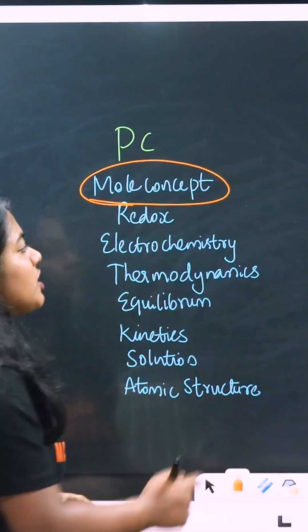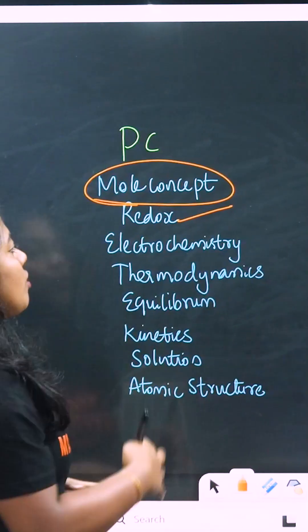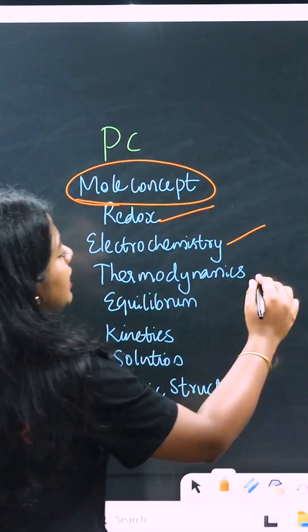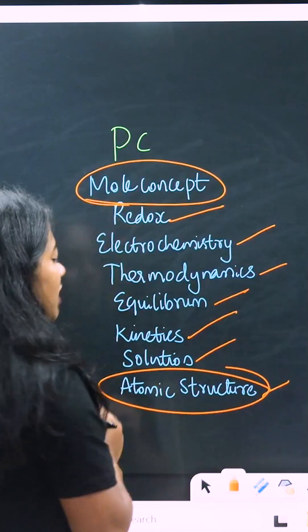So always start with the mole concept first, then go for redox because it has important connections. That is also an easy chapter. The order is: mole concept, redox, electrochemistry, which also connects with mole concept, then thermodynamics, equilibrium, kinetics, solutions, and always choose atomic structure last.